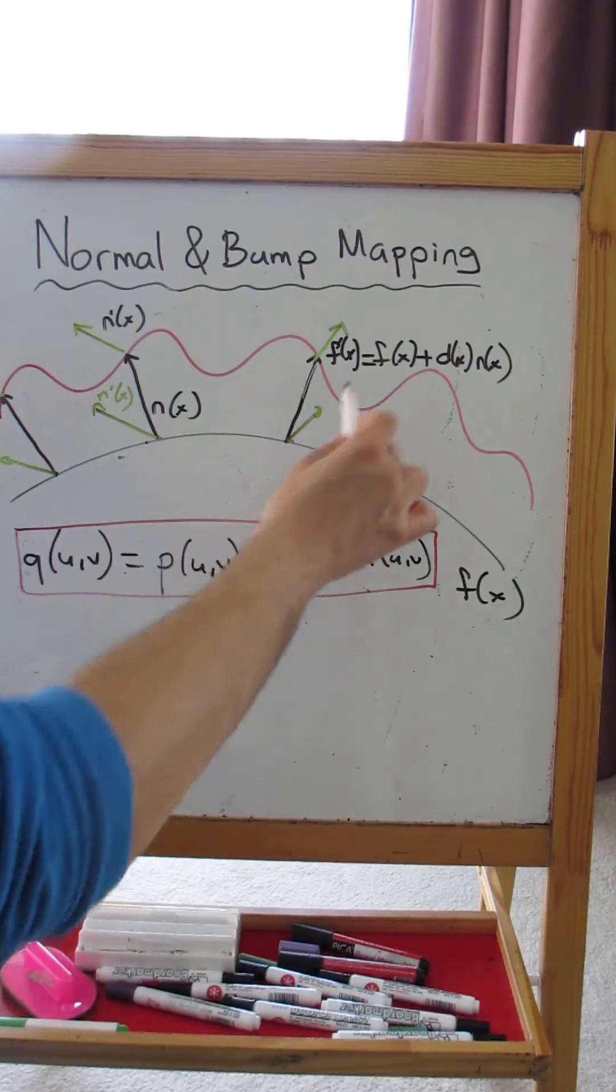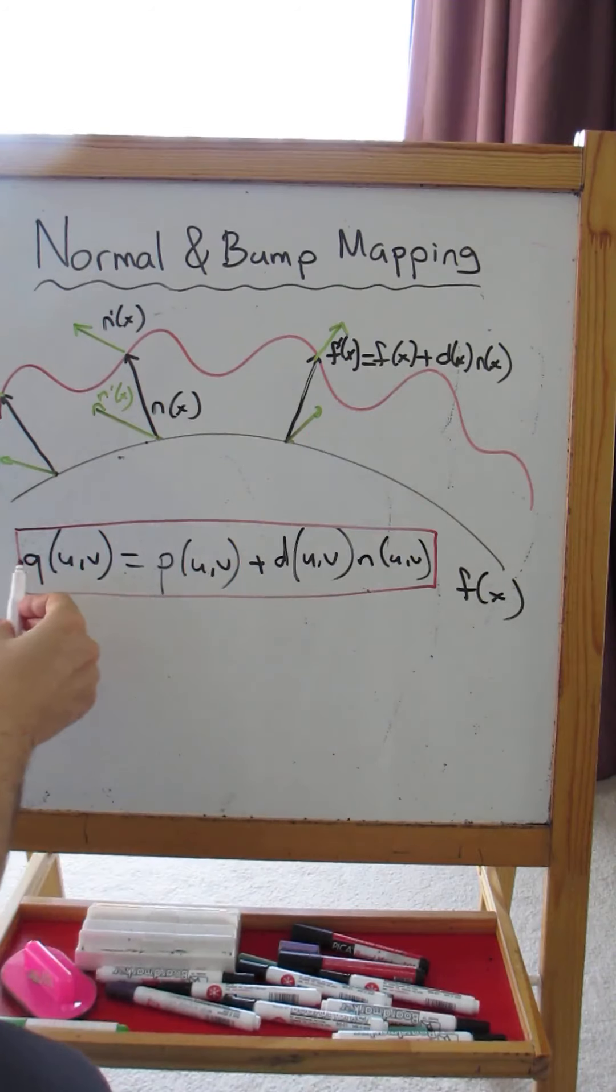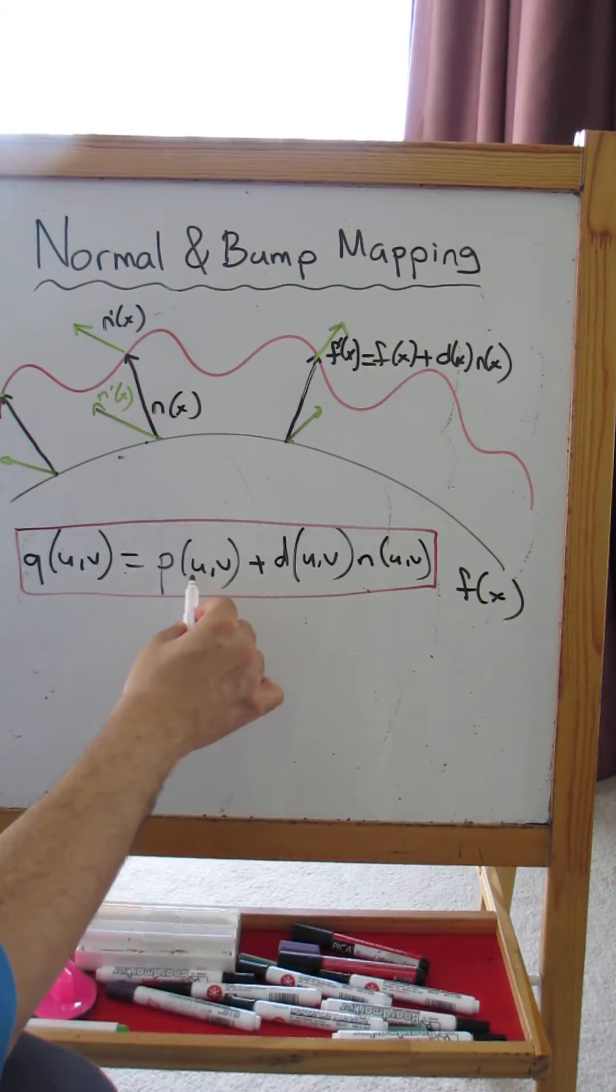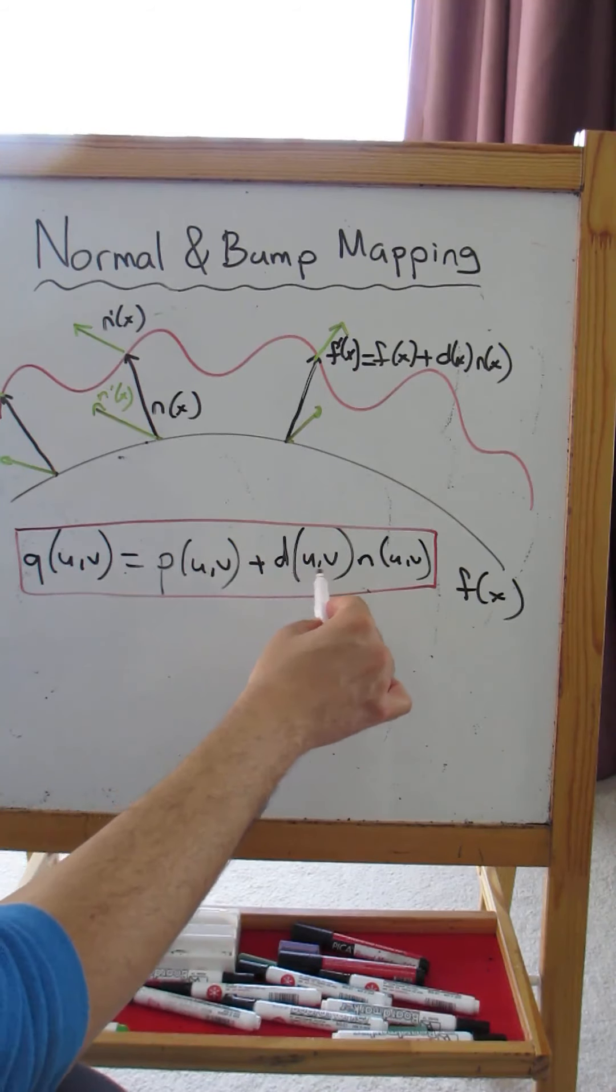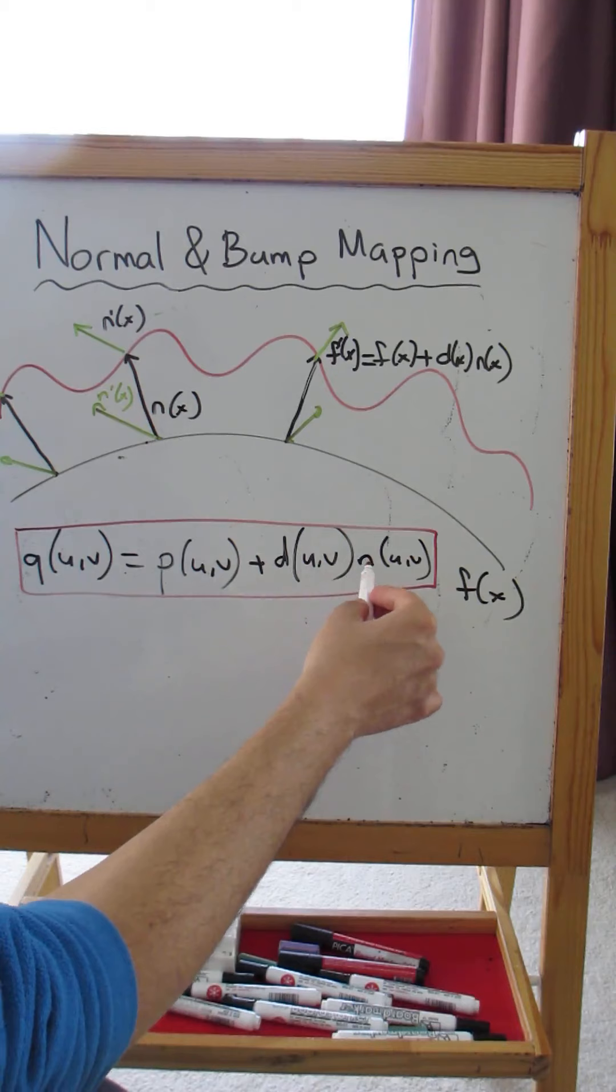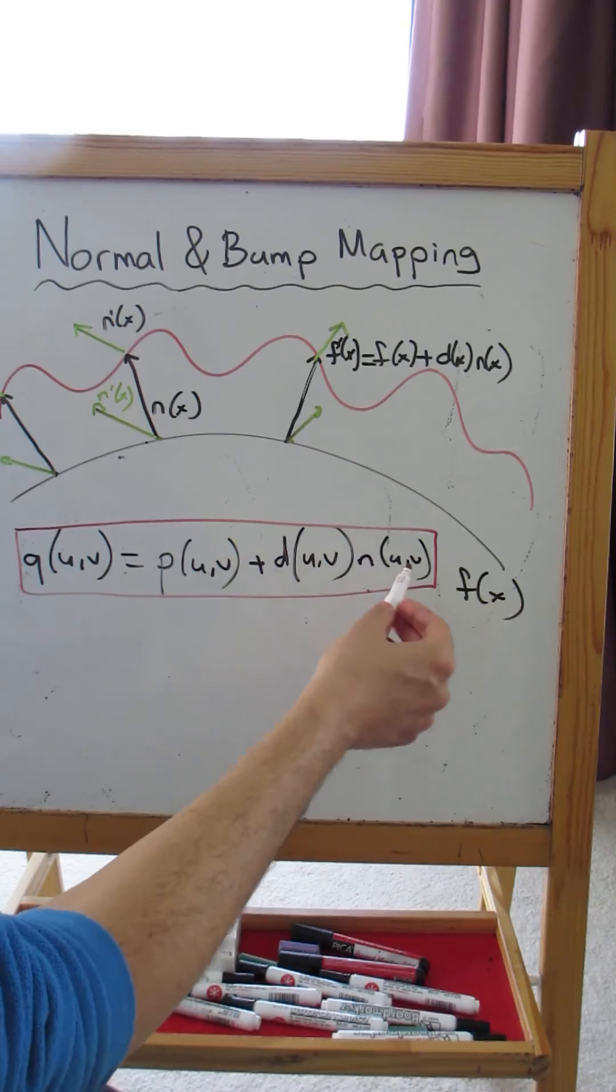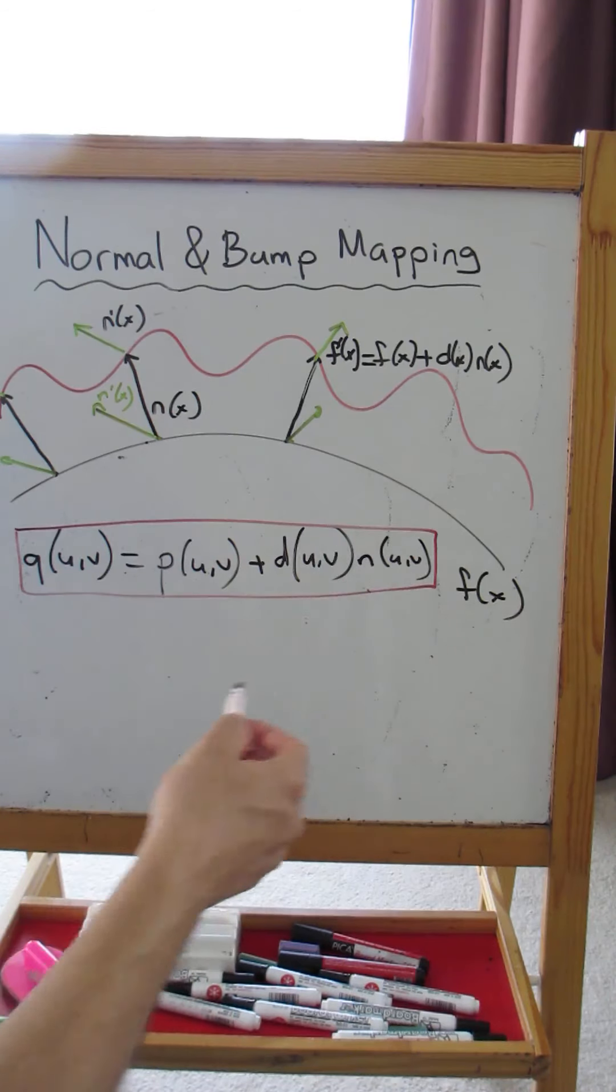So what we are saying is that the new position Q is equal to the previous position plus some bump amount—some displacement or you can call it height—times the normal, the original normal. We are bumping along the original normal.